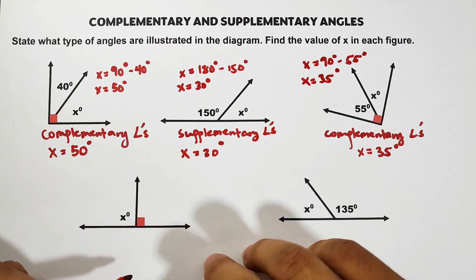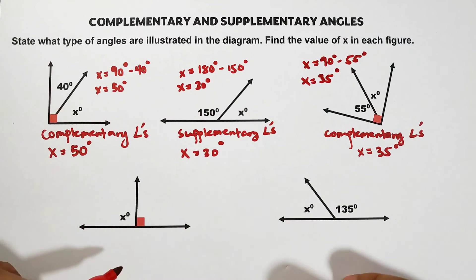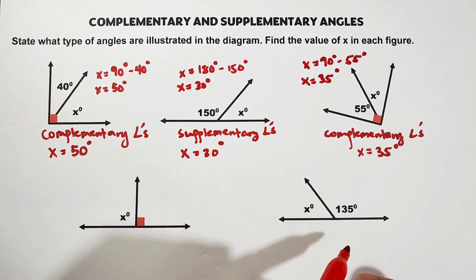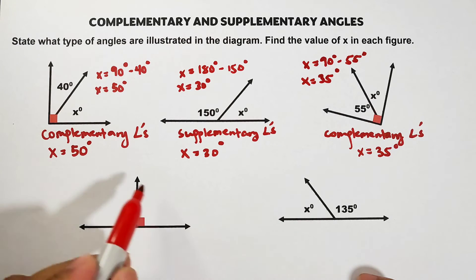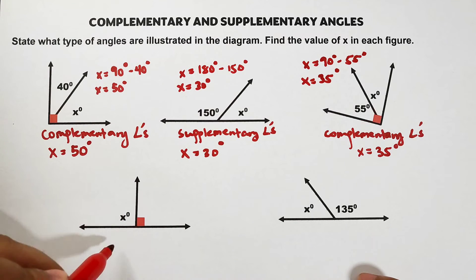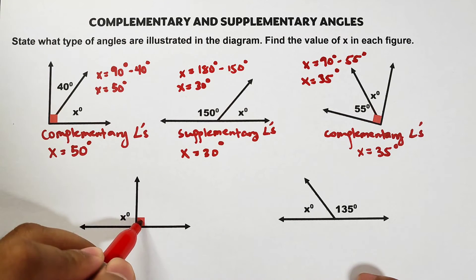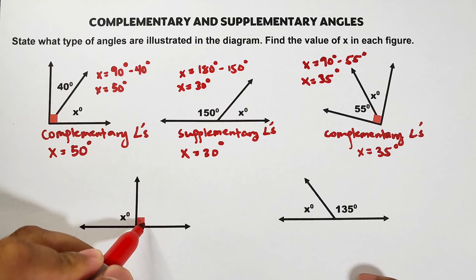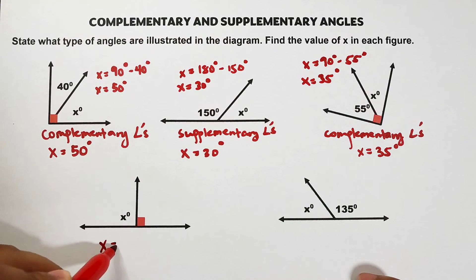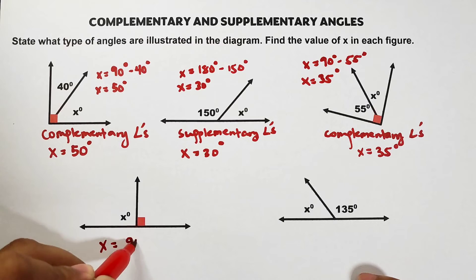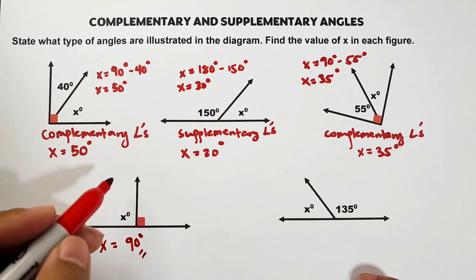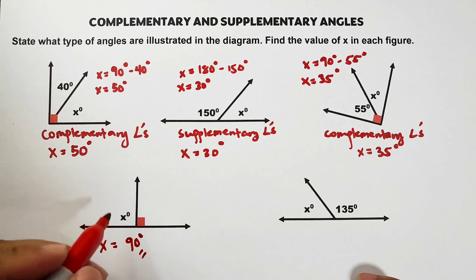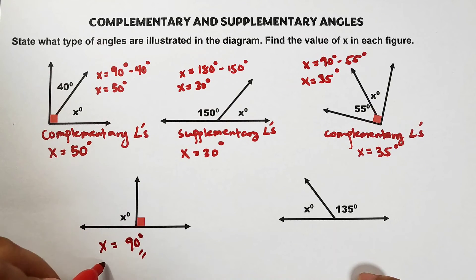Now let's have this final item, because this one will serve as your activity. For this angle, basically this is 90, which is half of the straight angle, so this is supplementary angles. Your x here — tell me the value of x in the comment section.